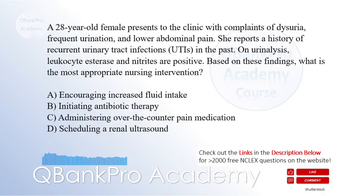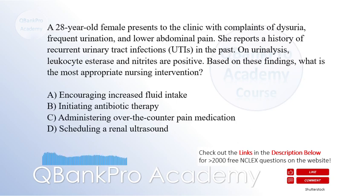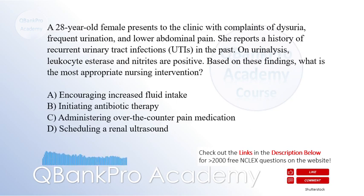A 28-year-old female presents to the clinic with complaints of dysuria, frequent urination, and lower abdominal pain. She reports a history of recurrent urinary tract infections in the past. On urinalysis, leukocyte esterase and nitrites are positive. Based on these findings, what is the most appropriate nursing intervention?